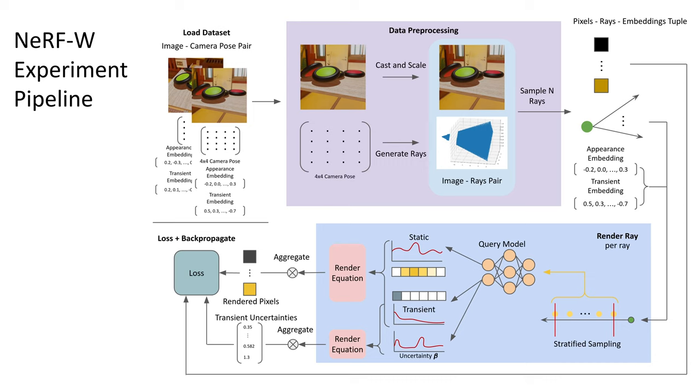This is the experiment pipeline for NeRF-W. This is similar to NeRF experiment pipeline. The additional components are as follows. When loading the images, an appearance and transient embedding vector are created for each image. And when we sample the ray, we also pass the appearance and transient embeddings of the ray's corresponding image to render.